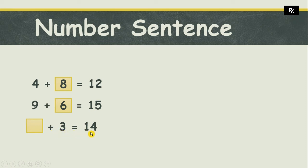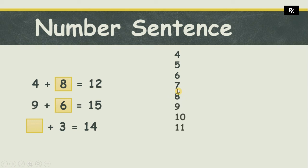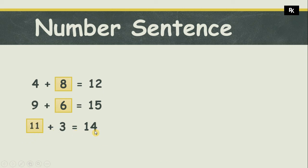Let's have another example. Here I have a blank, then an addition sign, and three that is equal to fourteen. There must be a number that will be added to three and give me fourteen. I have to start counting after three: four, five, six, seven, eight, nine, ten, eleven, twelve, thirteen, fourteen. I stop at fourteen. Counting the numbers after three gives me eleven. So eleven plus three equals fourteen.